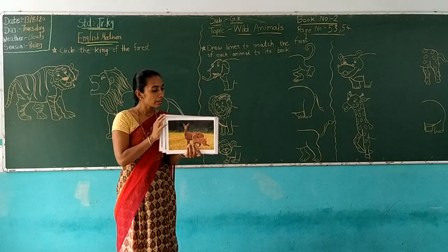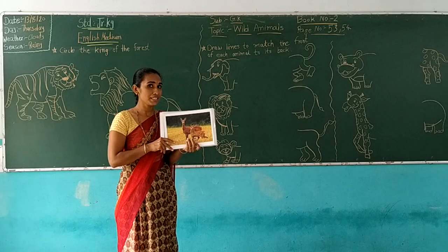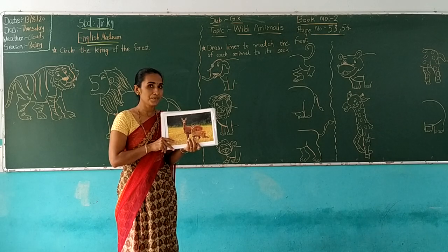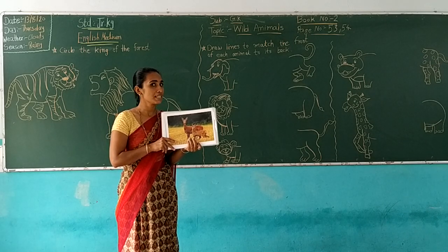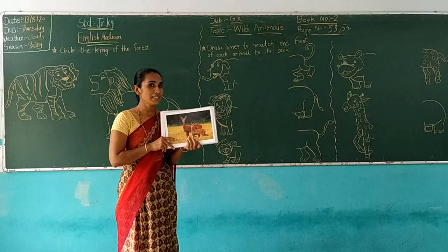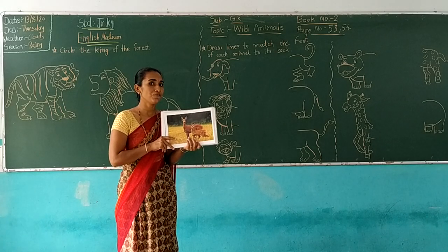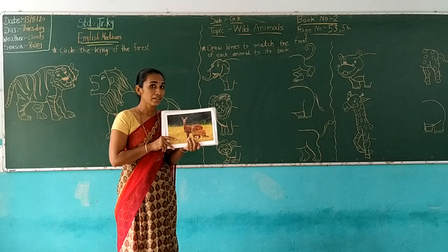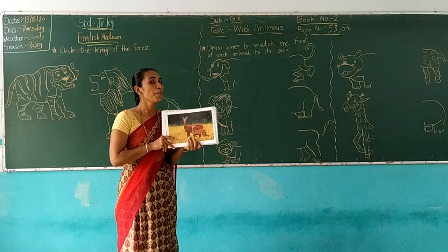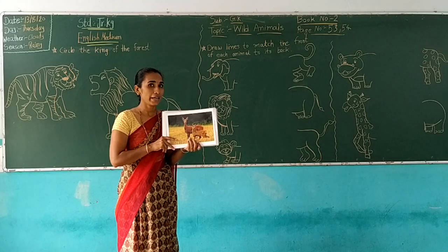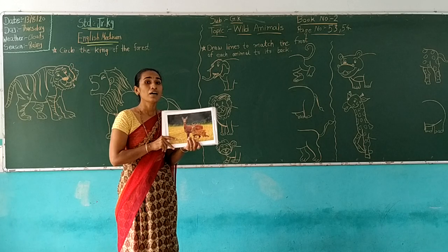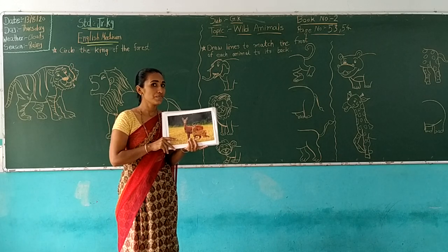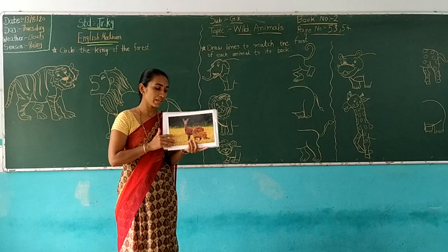And which animal is this? This is a deer. D for deer. A deer is a beautiful animal, and a deer runs very fast.